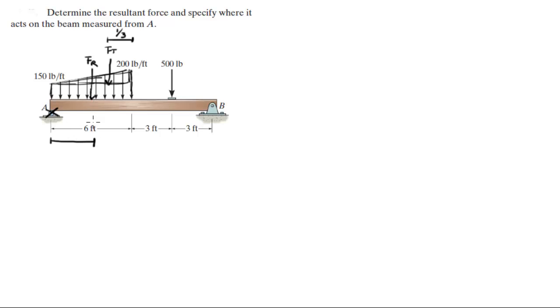FR acts right at the middle of the rectangle, which is three feet, because the length of the rectangle is six feet, and a half is at three feet. The triangle acts at one third from the long edge of the triangle, which would make this two feet, which would make this length four feet.